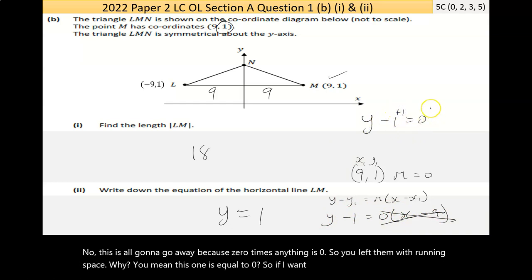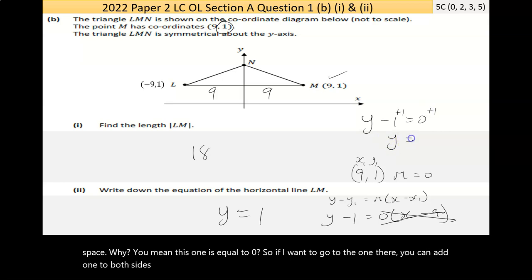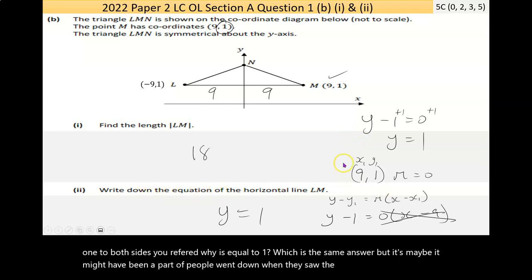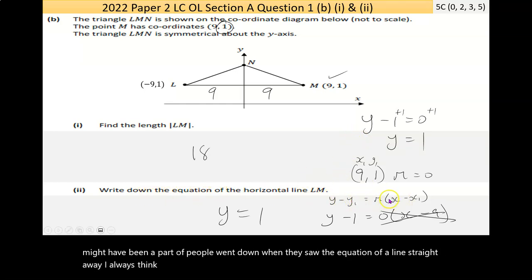So, you're left with y minus 1 is equal to 0. If I want to get rid of the 1 there, I can add 1 to both sides. You're left with y is equal to 1, which is the same answer, but it might have been a path people went down when they saw the equation of a line.